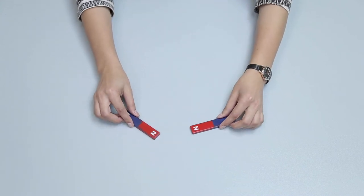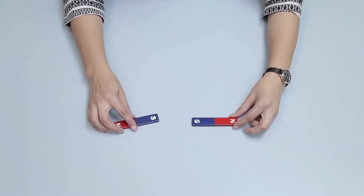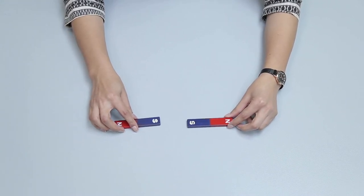Similarly, place the two bar magnets with south poles facing each other. You will observe that they will repel each other.